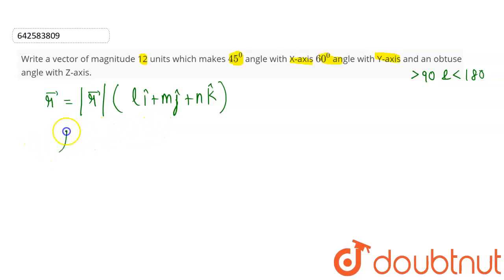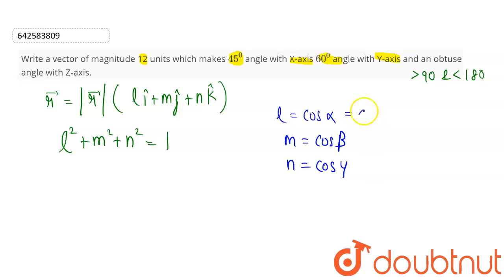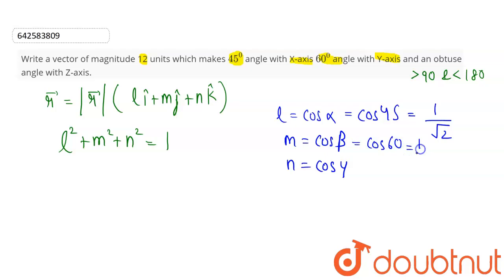As we know, l² + m² + n² = 1, where l = cos α, m = cos β, and n = cos γ. Since α is the angle made with the x-axis, l = cos 45° = 1/√2. Since β is the angle made with the y-axis, m = cos 60° = 1/2.